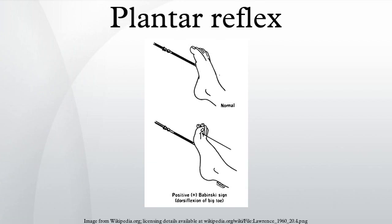There are three responses possible. Flexor: the toes curve down and inwards, and the foot averts — this is the response seen in healthy adults. Indifferent: there is no response. Extensor: the hallux dorsiflexes and the other toes fan out — this is Babinski's sign,